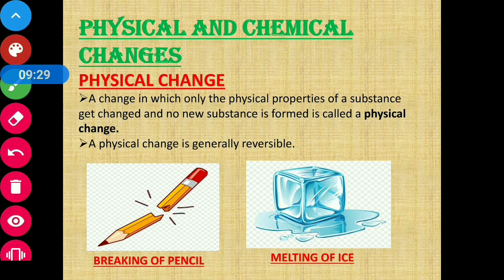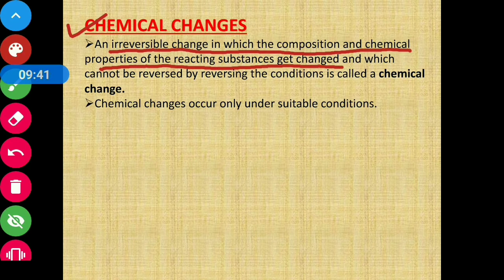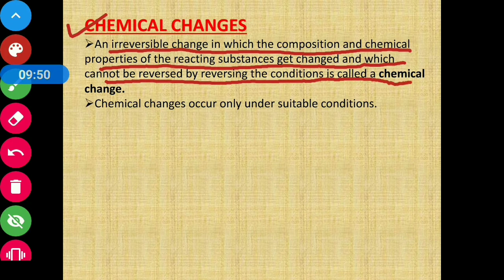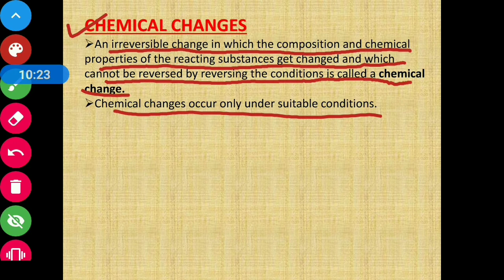Now let's discuss chemical changes. A change in which the composition and chemical properties of the reacting substance get changed, and which cannot be reversed by reversing the conditions, is called a chemical change. Chemical changes occur only under suitable conditions. Chemical changes are irreversible changes jisme kisi substance ki chemical properties react karne ke baad change ho jaati hain — ek naya substance milta hai jo original mein wapas nahi aa sakta.